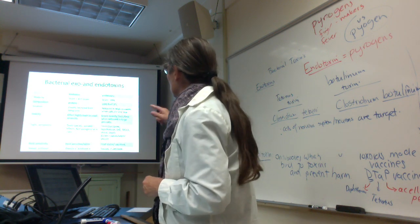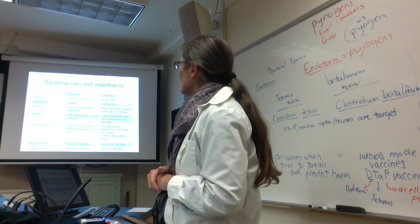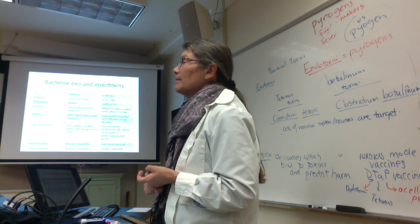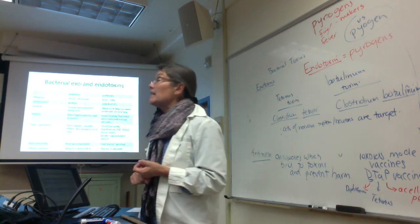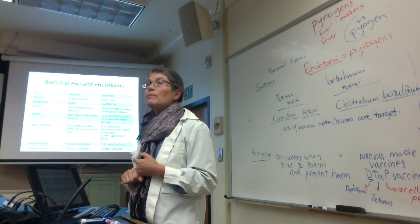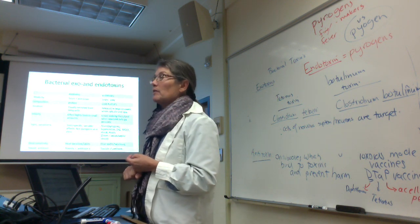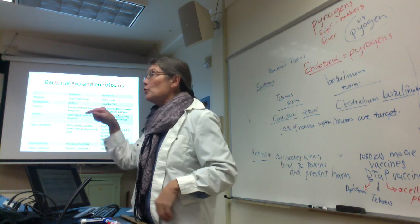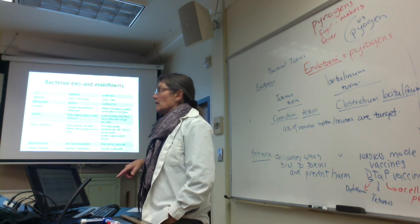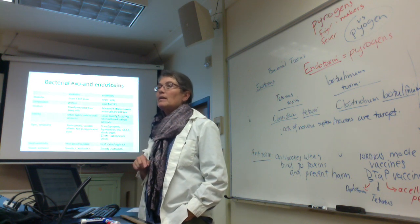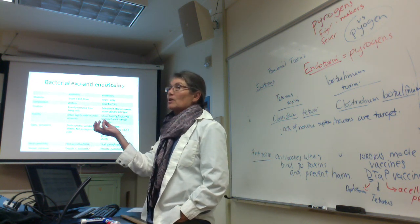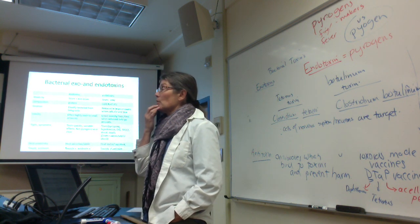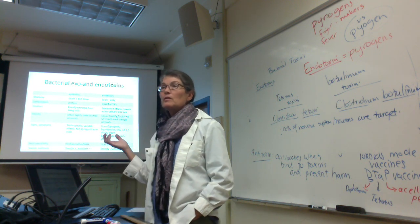The last important comparison: since exotoxins are proteins, they can be denatured by heat — they're heat sensitive, and we can destroy and inactivate most of them through heat treatment. Endotoxins, however, are heat stable. You can autoclave gram-negative bacteria — yes, you kill the bacteria — but the endotoxin in their cell walls remains active. This becomes really important when people are preparing pharmaceuticals.